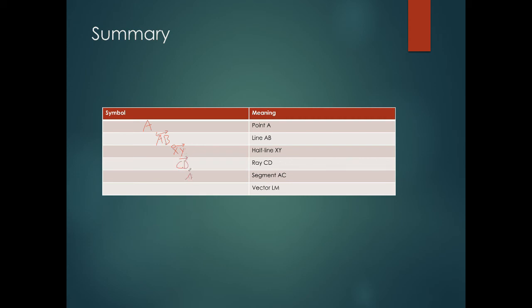Segment AC. We didn't talk about vector yet. Vector is a quantity that has both magnitude and direction—how long the vector is and the direction it's pointing matters. We don't really discuss that here in geometry, but I just want you to see another symbol. For vector LM you put like a half ray on there, just the top part.